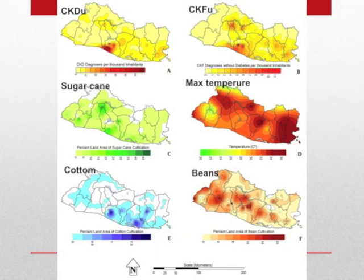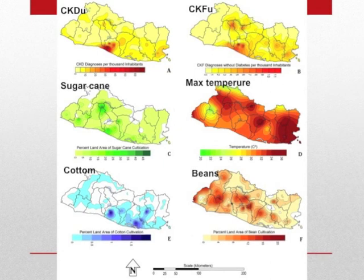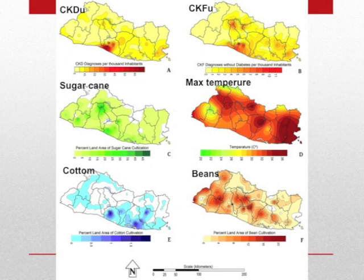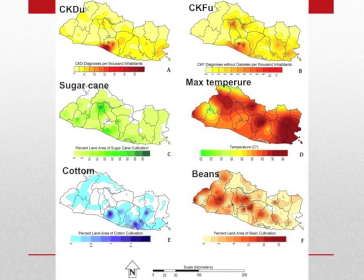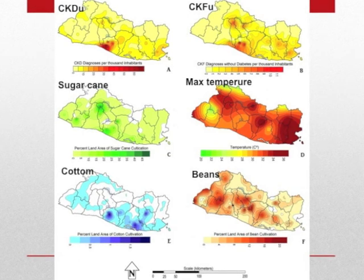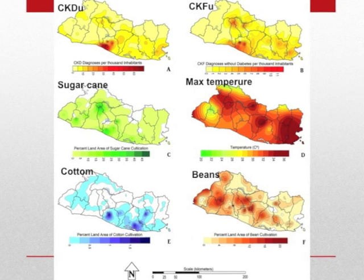When we produce the maps for the spatial distribution of the disease and the different environmental variables, we can see that chronic kidney disease and chronic kidney failure, the last stage of the disease, are well correlated with each other as expected. Maximum temperatures are not as well correlated, with maximum temperature areas not coinciding with maximum disease areas. On the other hand, the sugarcane map resembles the map of chronic kidney failure very well. Cotton and beans are also relatively similar.